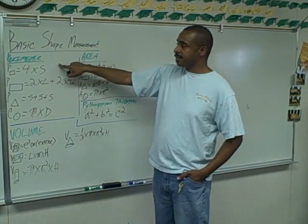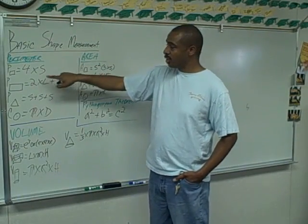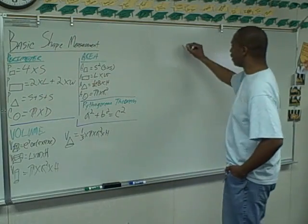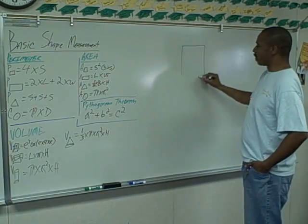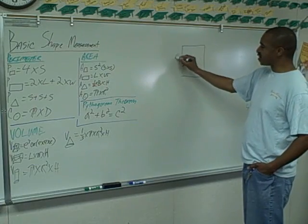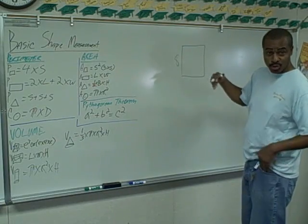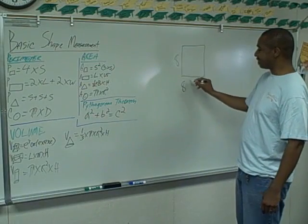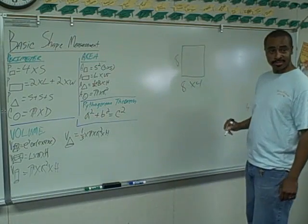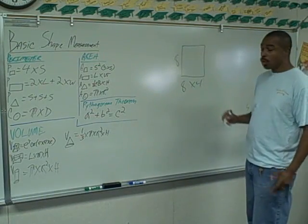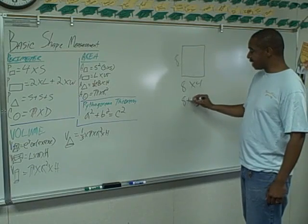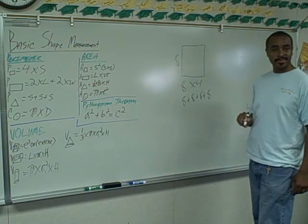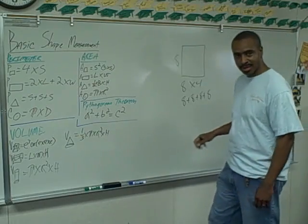The perimeter of a square is four times a side. So if you have a square and say this side is eight — all sides are the same — that's just going to be eight times four. Or another way to look at it is eight plus eight plus eight plus eight, which is the same thing.